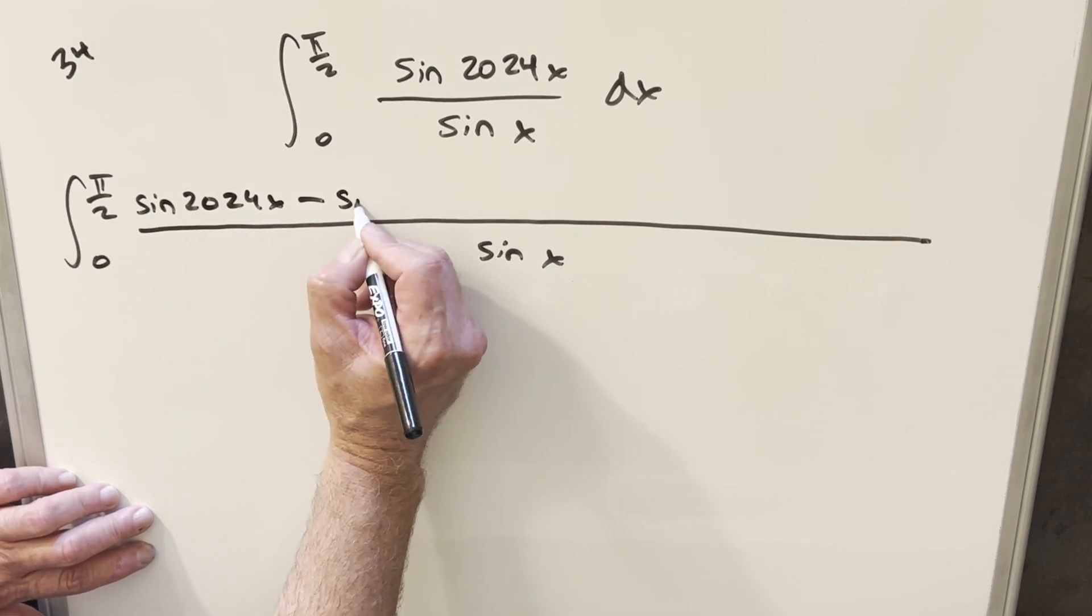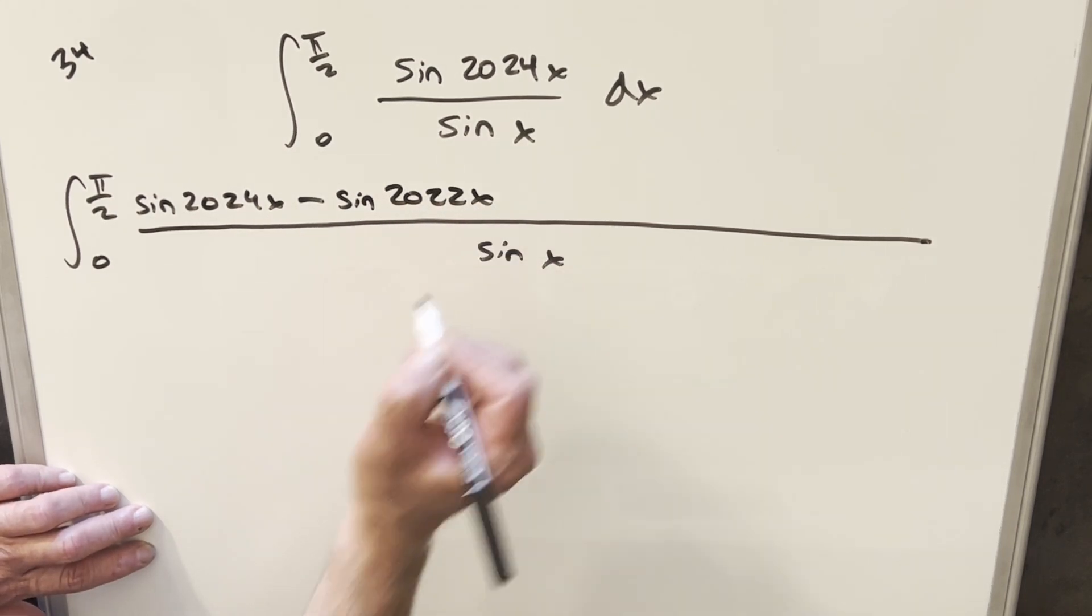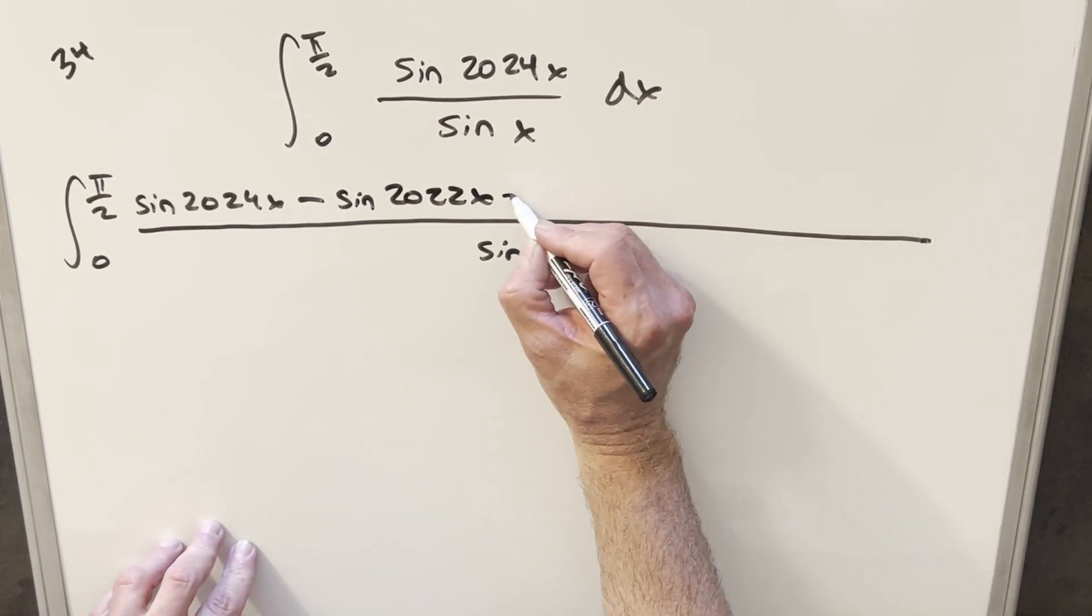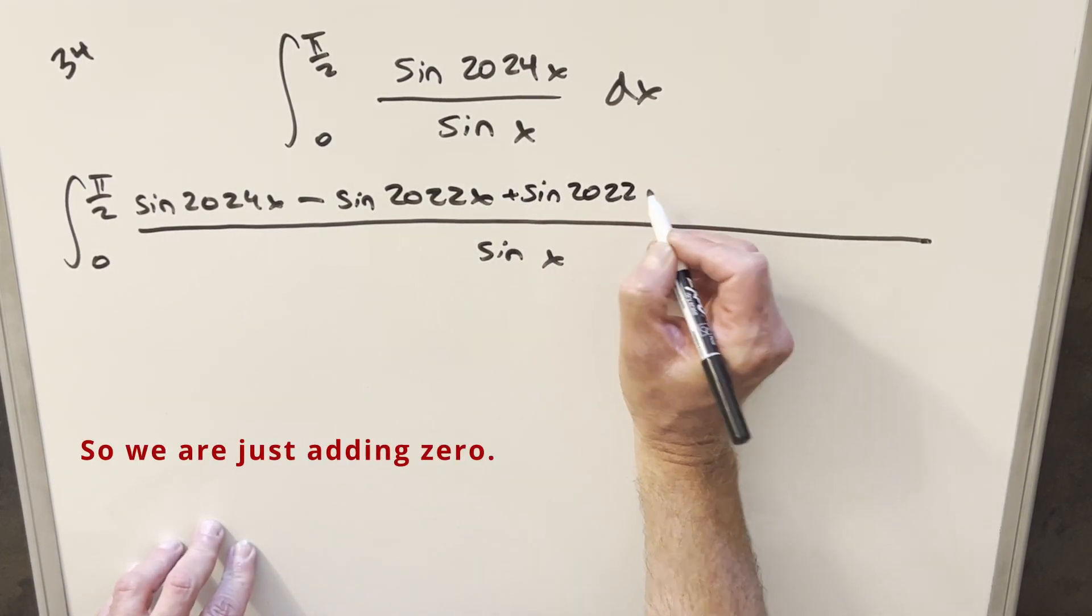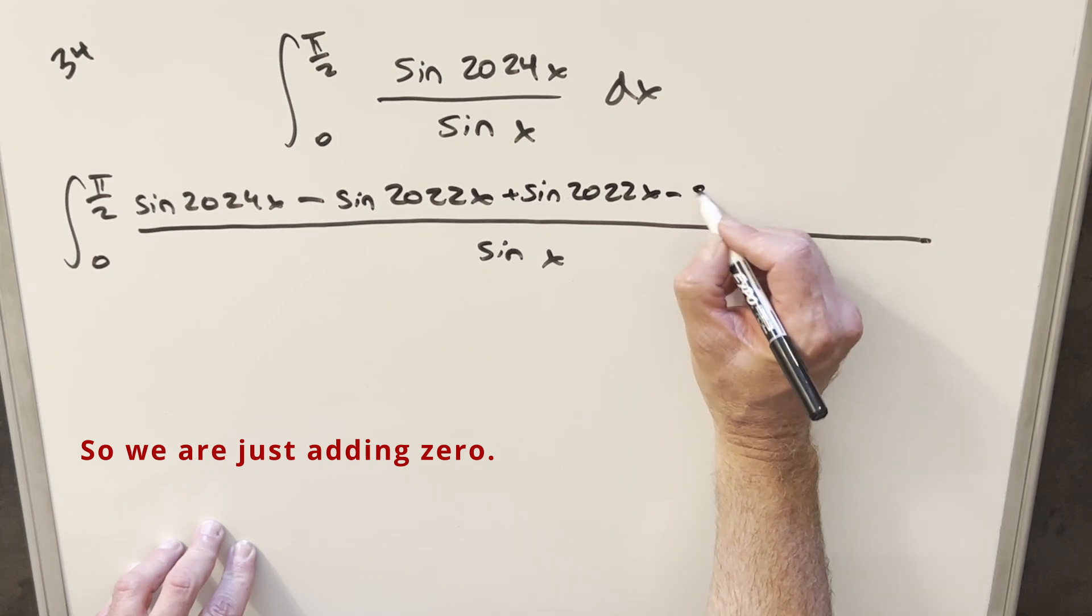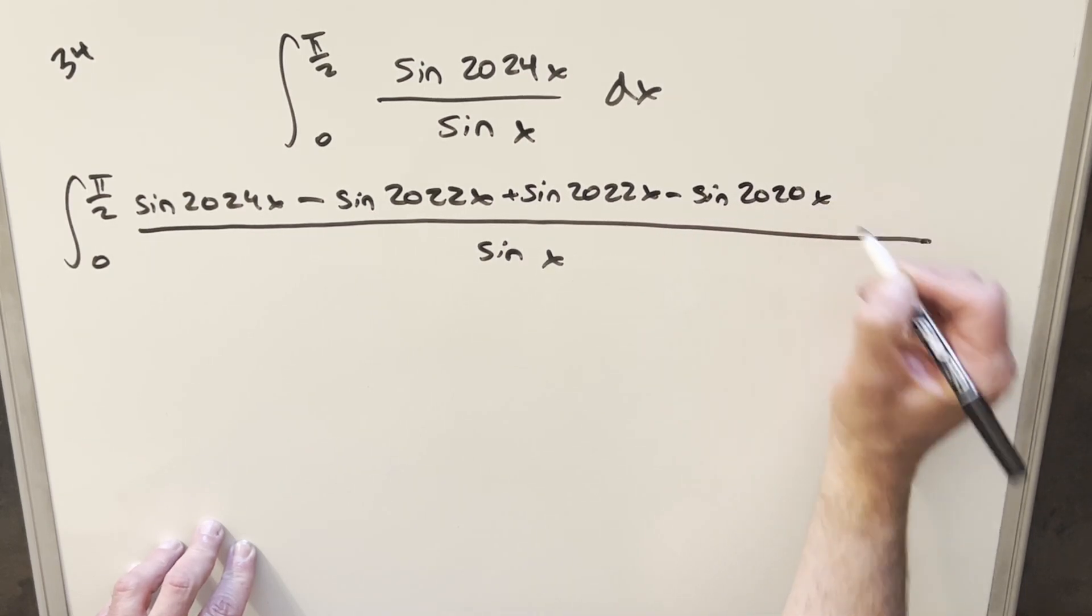And they just created a sine of 2022x, and then you don't want to change it, right? So you have to add back sine 2022x, but then you do the same thing again, and you subtract off sine 2020x.